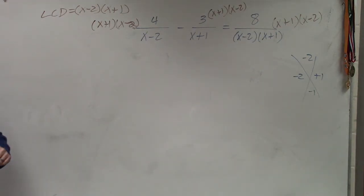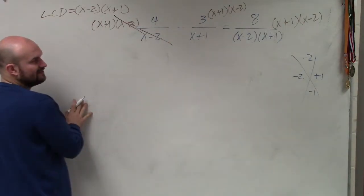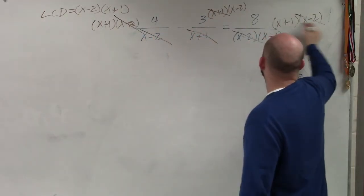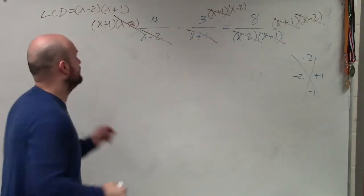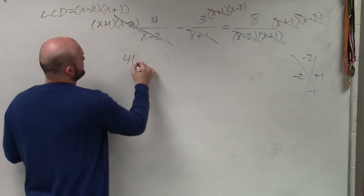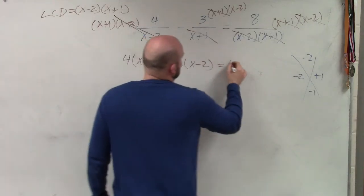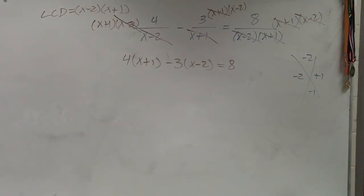What that does now is now those divide out, those divide out, and those divide out. So now basically what I have is an equation that looks like this: 4 times x plus 1 minus 3 times x minus 2 is equal to 8. But what I want you guys to see is by doing that, look what I just did with my equation. I'm trying to now solve an equation that doesn't have any fractions in it.